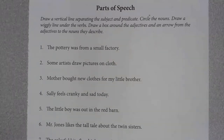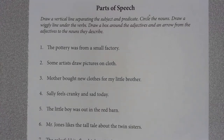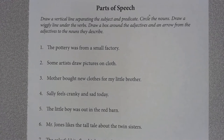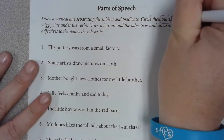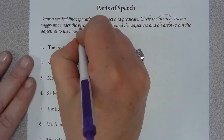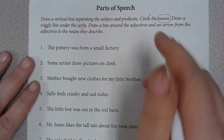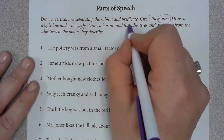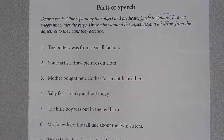Now, let's read the directions. It says parts of speech. Draw a vertical line — vertical line means up and down — separating the subject from the predicate. The subject is what the sentence is about; the predicate is the action part. Also, it says circle the nouns. You are going to circle the nouns, draw a wiggly line under the verbs, and draw a box around the adjectives. Then you're going to match the adjective with the noun that it describes.